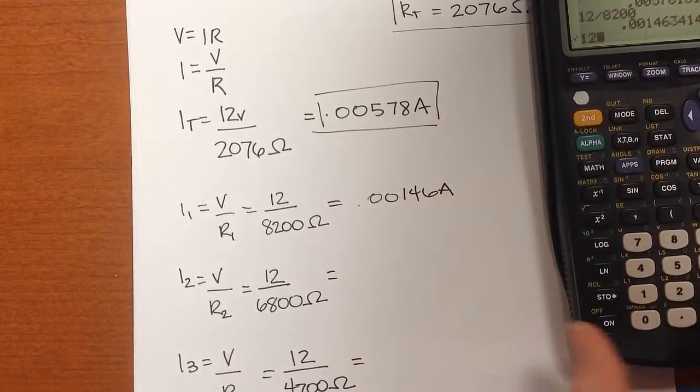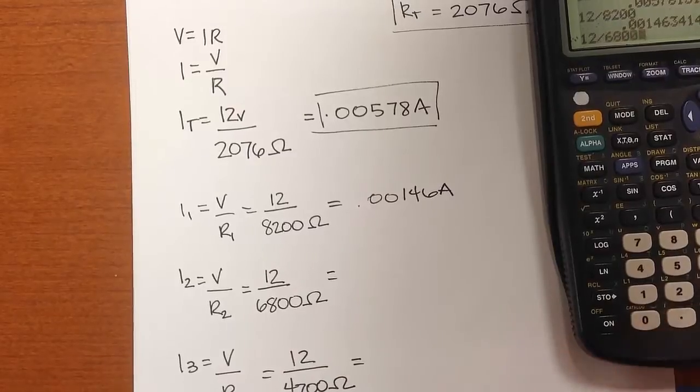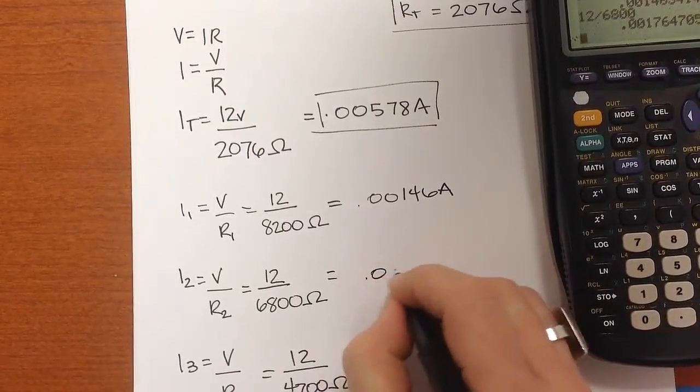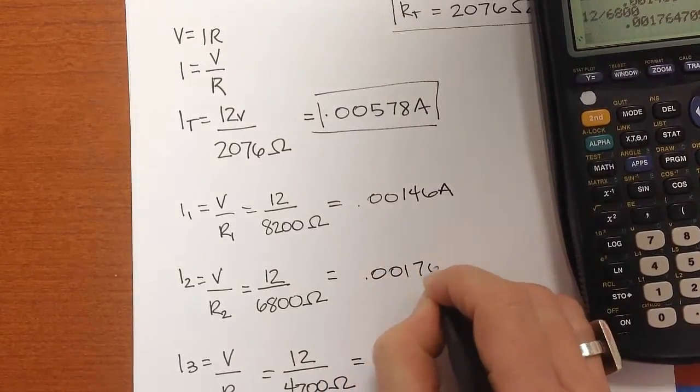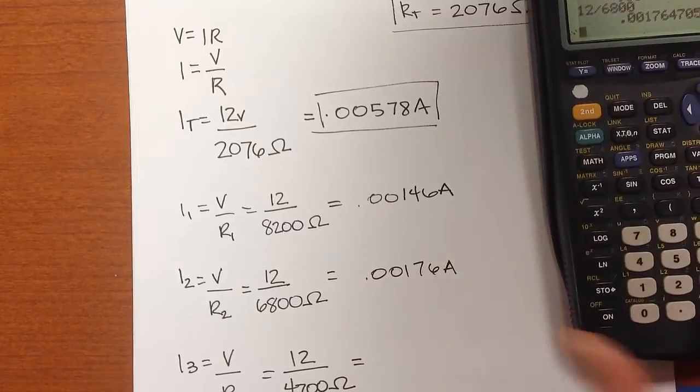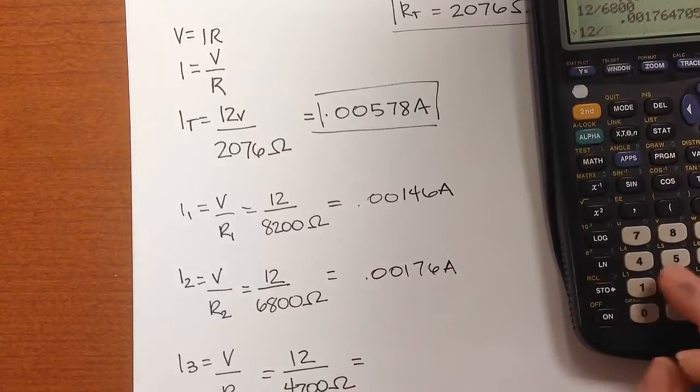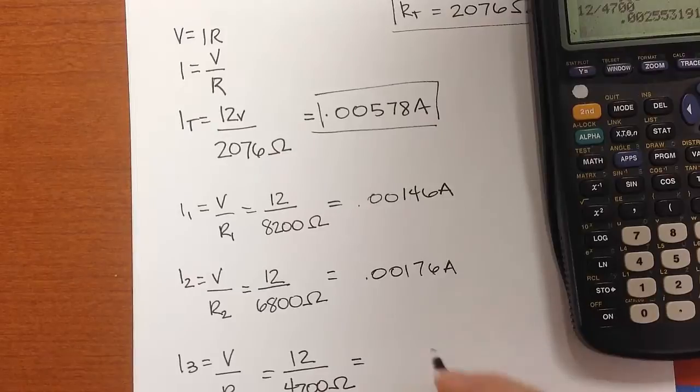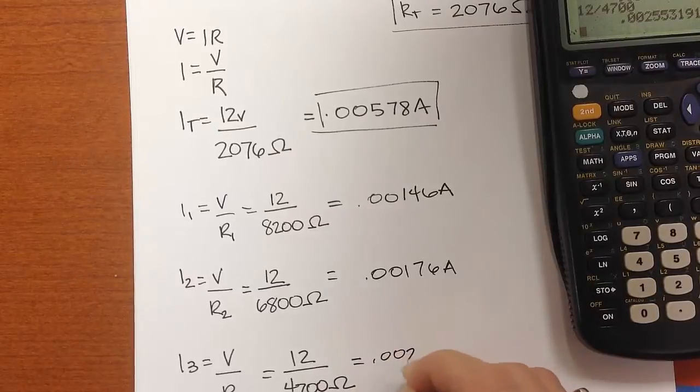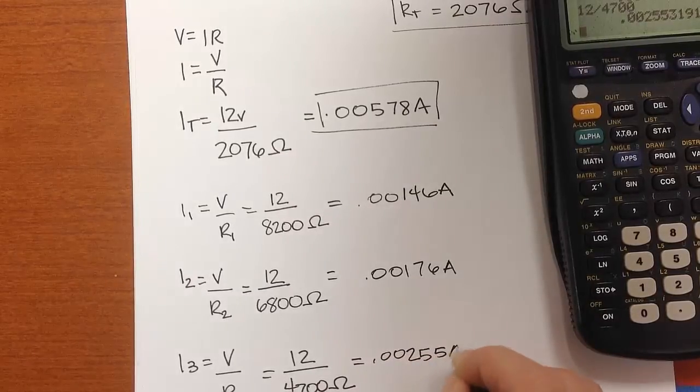And 12 divided by 6,800, 0.00176 amps, and 12 divided by 4,700 is 0.00255 amps.